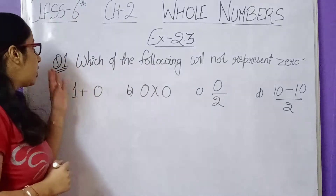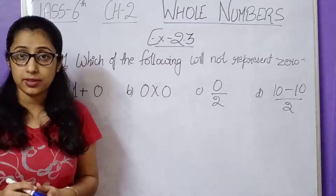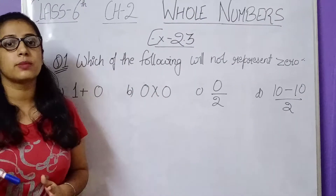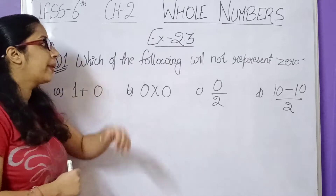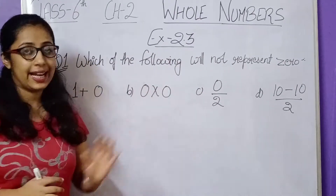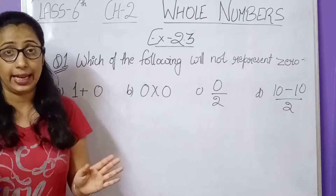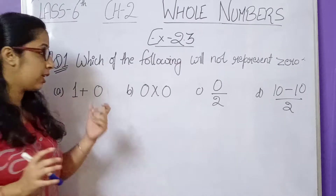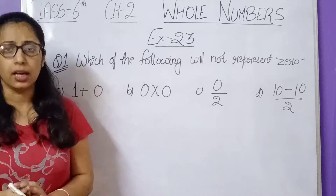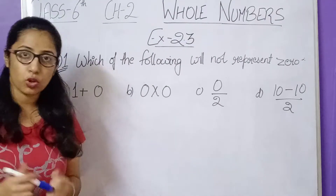Question number 1: which of the following will not represent 0? You have options given and you have to choose one. We need to find which part cannot give us 0, so we will have to solve each part one by one.